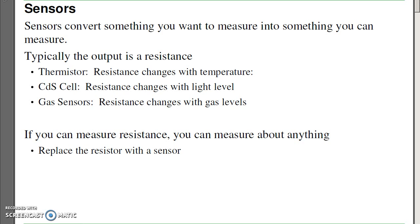For example, a couple sensors where the output is resistance would be a thermistor, where the resistance changes with temperature, a cadmium sulfide light sensor where the resistance changes with light levels, or a gas sensor where the gas changes the resistivity of the material. If you can measure resistance, then you can measure just about anything.